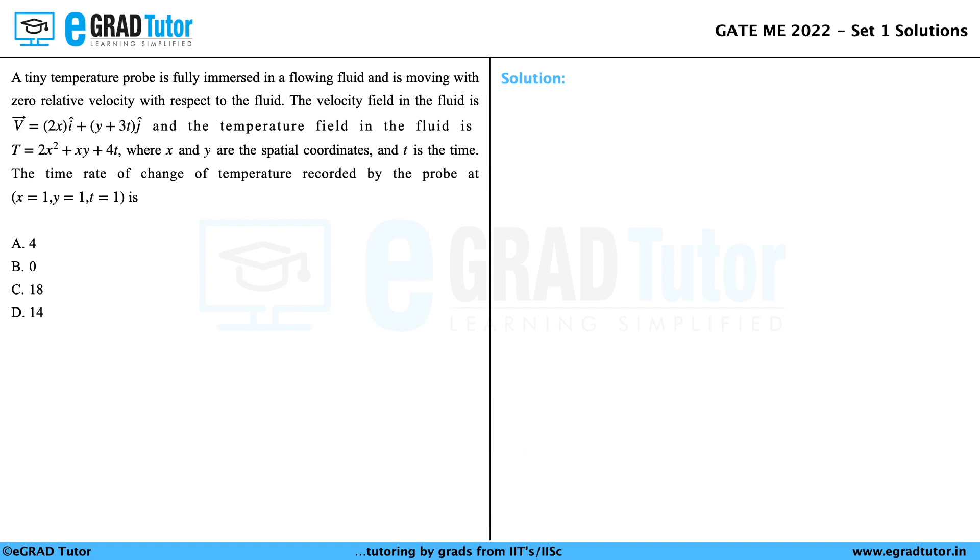A tiny temperature probe is fully immersed in a flowing fluid and is moving with zero relative velocity with respect to the fluid. The velocity field in the fluid is vector v equals 2x i hat plus (y plus 3t) j hat, and the temperature field in the fluid is T equals 2x squared plus xy plus 4t, where x and y are the spatial coordinates and t is the time. The time rate of change of temperature recorded by the probe at x equals 1, y equals 1, t equals 1 is.